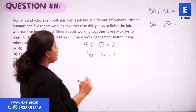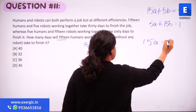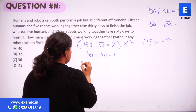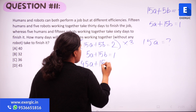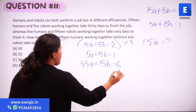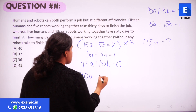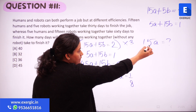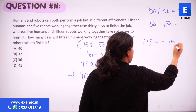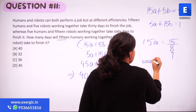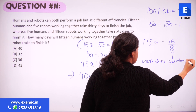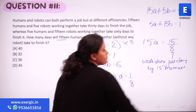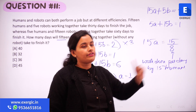I want to find out how much time 15 humans take to do the work, so I need to find 15A. Let's eliminate B by multiplying the first equation by 3: that gives 45A + 15B = 6. Subtracting the second equation: 40A = 5, so A = 1/8. Therefore, the work done by 15 humans per day is 15 times 1/8, which is 15/8.